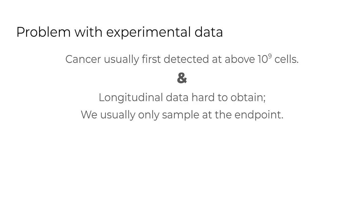Why is it difficult to actually investigate? First, you don't have most of the history of the tumor. We usually detect them around one billion cells — 10 to the power of 9 — or even later. So for most of the history of the tumor we don't know what's happening, and even after we detect those tumors it is difficult to obtain longitudinal data. We usually have only one sample at the time of the biopsy or treatment — you would normally not allow the tumor to grow uninterrupted so you can obtain multiple data points over time.